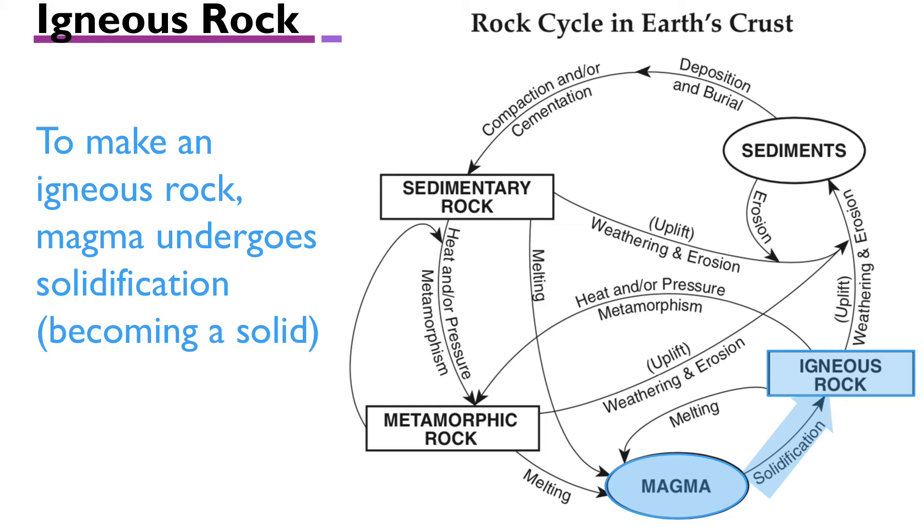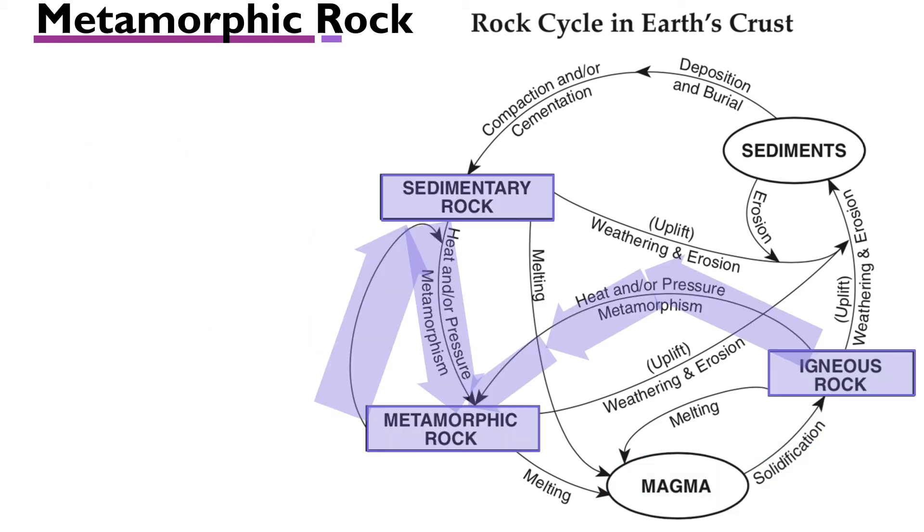This next diagram for metamorphic rock seems complicated, but remember that metamorphic rocks all form from heat and pressure. The ingredients for metamorphic rocks are pre-existing rocks. If we start with the sedimentary rock rectangle and follow the arrow down to the metamorphic rock rectangle, you'll see that heat and pressure turn a sedimentary rock into metamorphic. You can also start at the igneous rock rectangle, put that under heat and pressure, and follow the arrows into the metamorphic rock box.